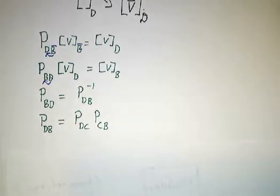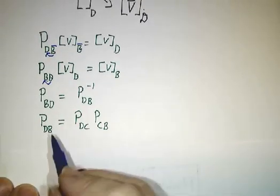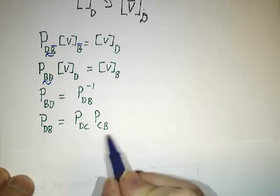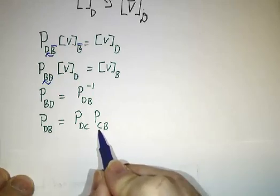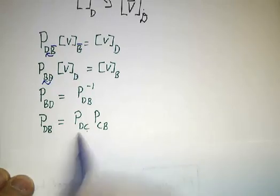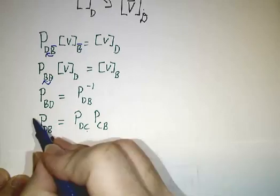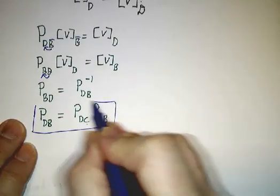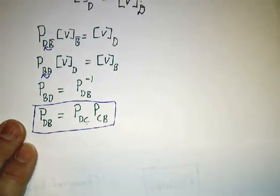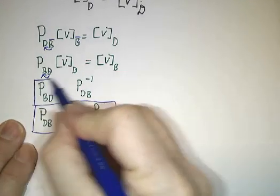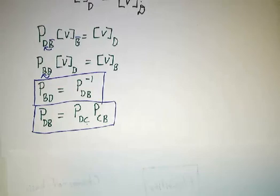Finally, if you have three bases and you want to convert from B to D, you could first convert from B to C, and then convert from C to D. This is the rule for how you compose change-of-basis matrices. And this is the rule for how you take inverses of change-of-basis matrices.